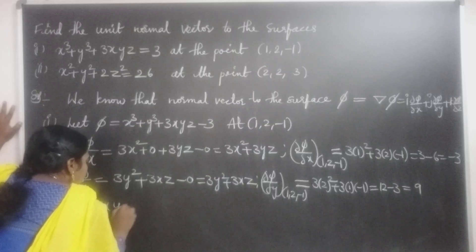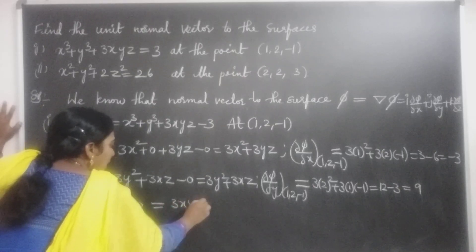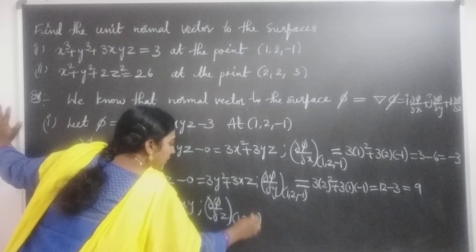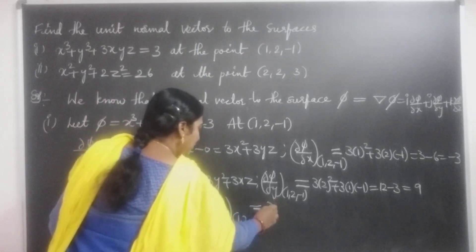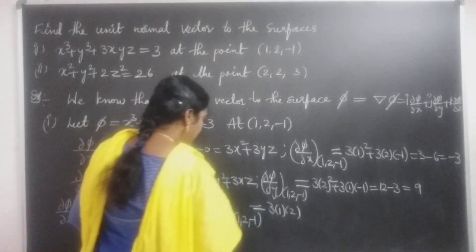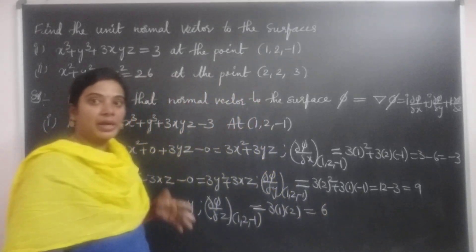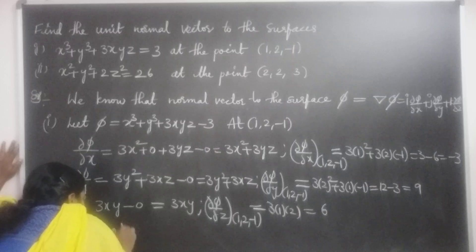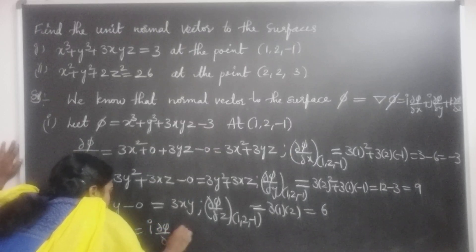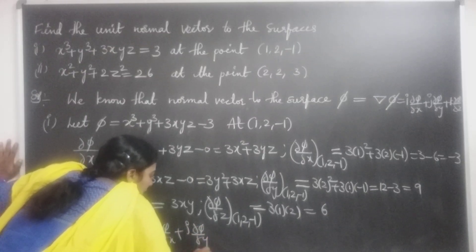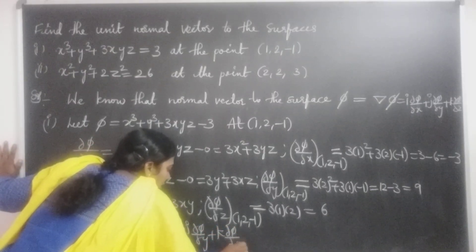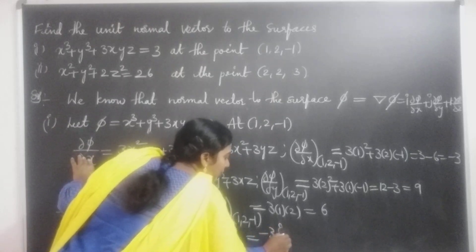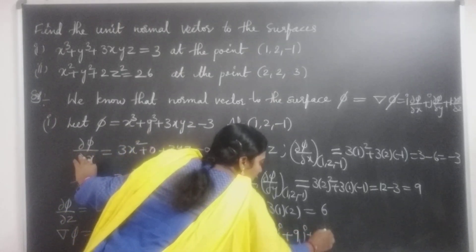∂φ/∂z: the first two terms x³ and y³ are treated as constants so their derivatives are 0, giving 3xy. At point (1, 2, −1): ∂φ/∂z = 3(1)(2) = 6. Therefore, del φ = grad φ = −3i + 9j + 6k. This is the normal vector.